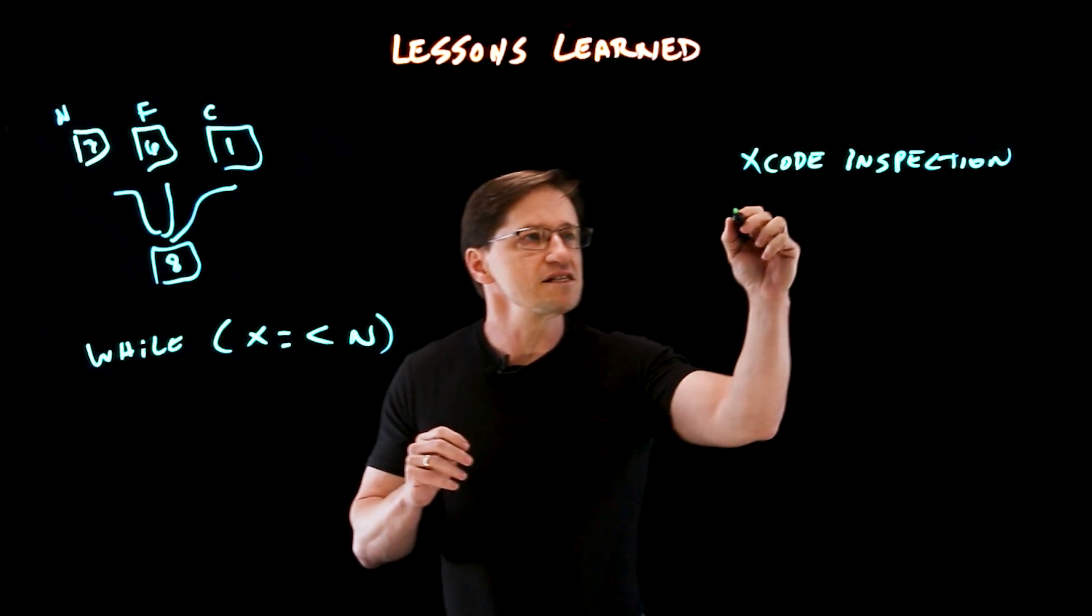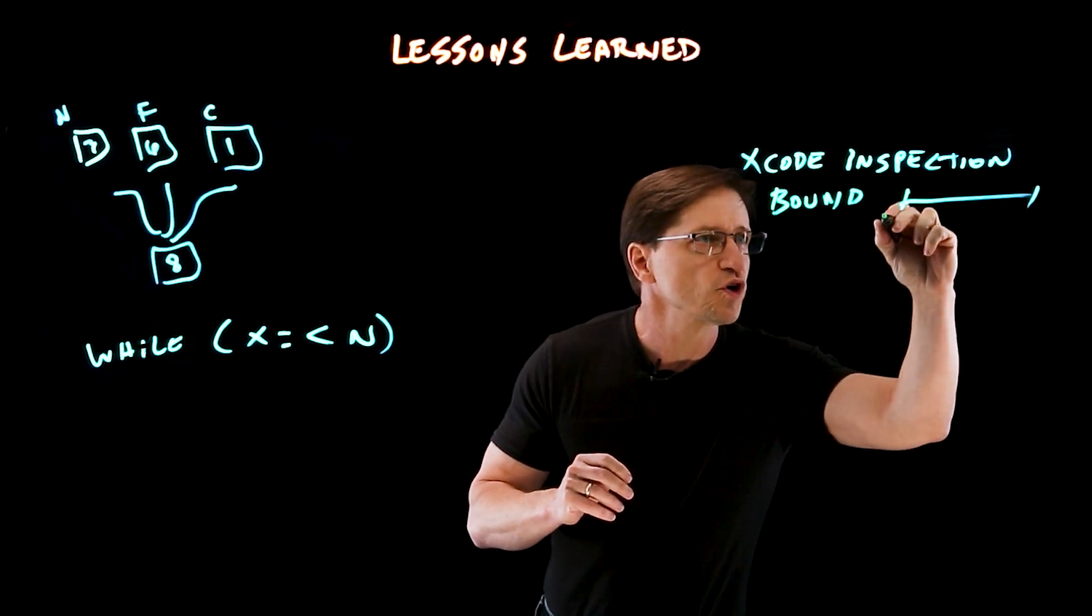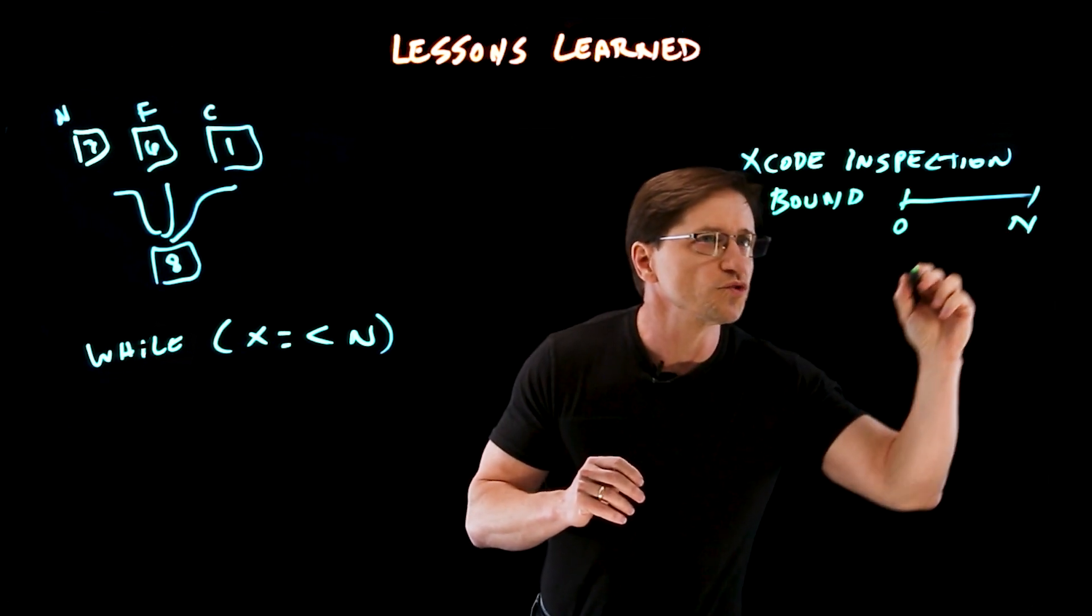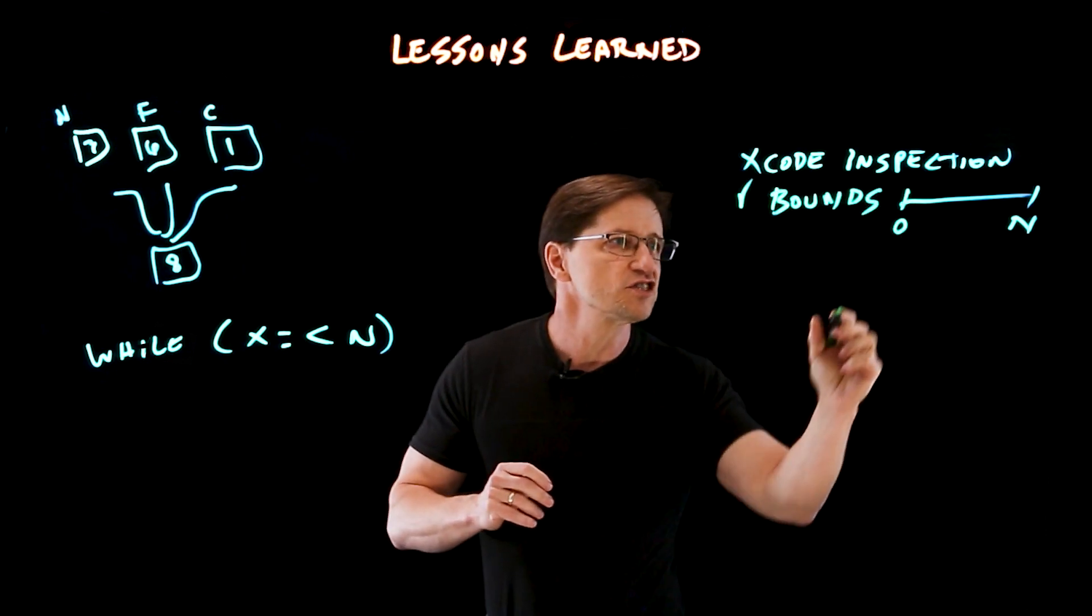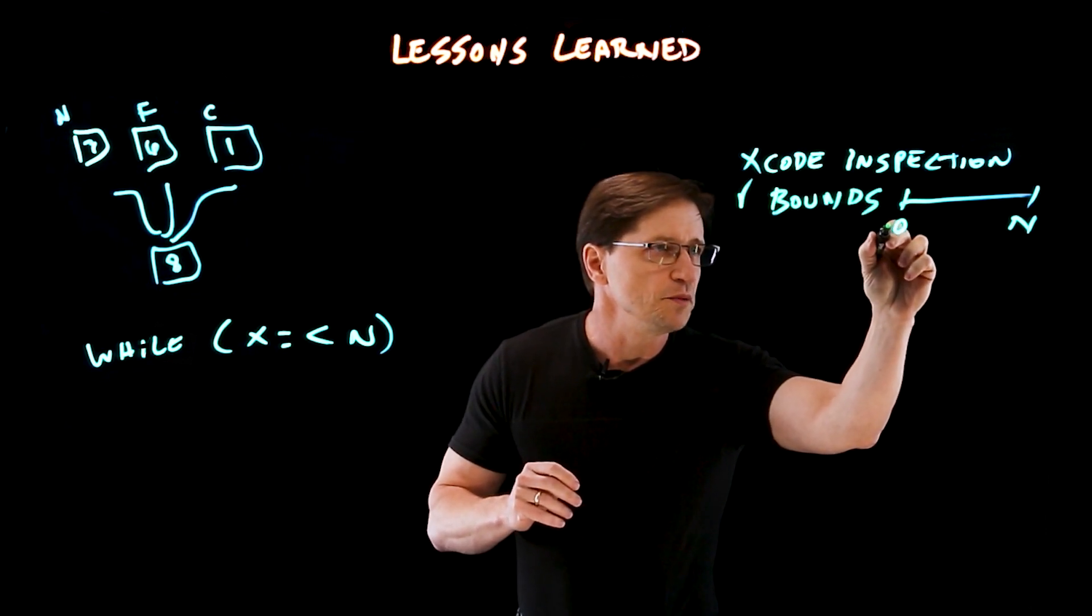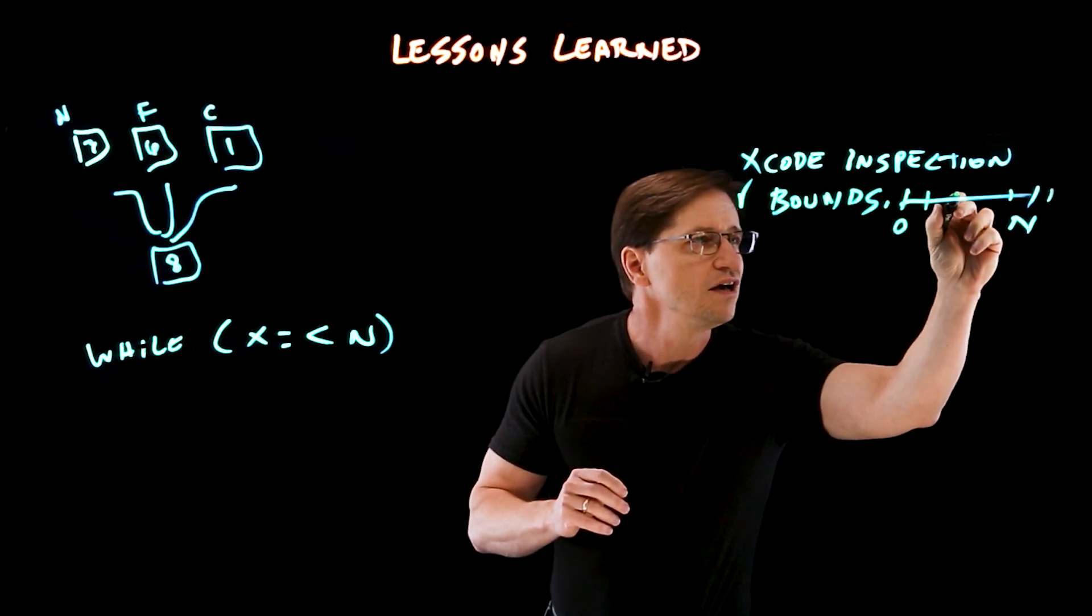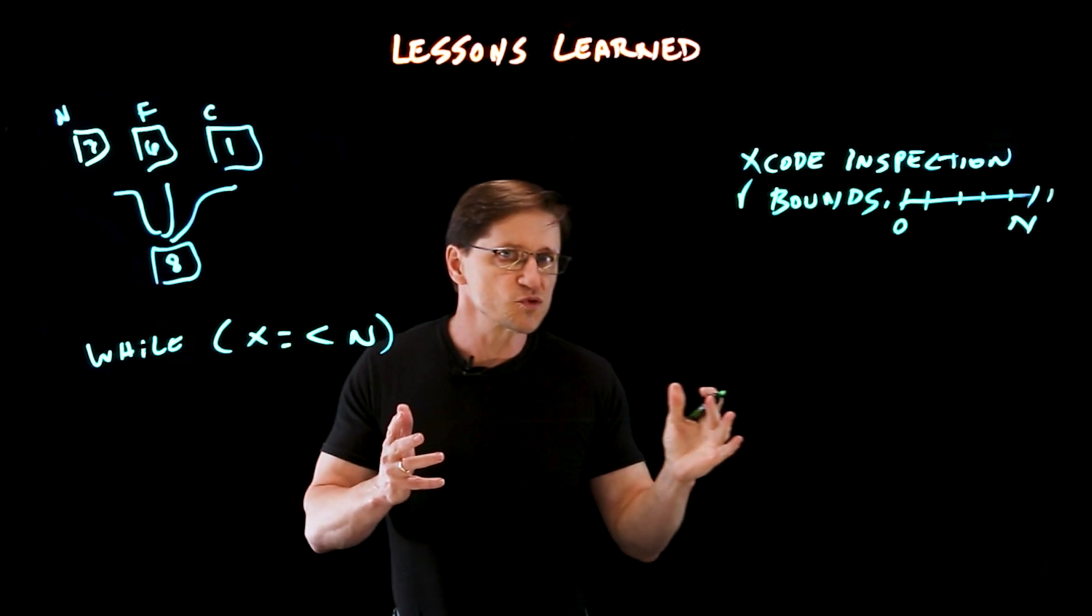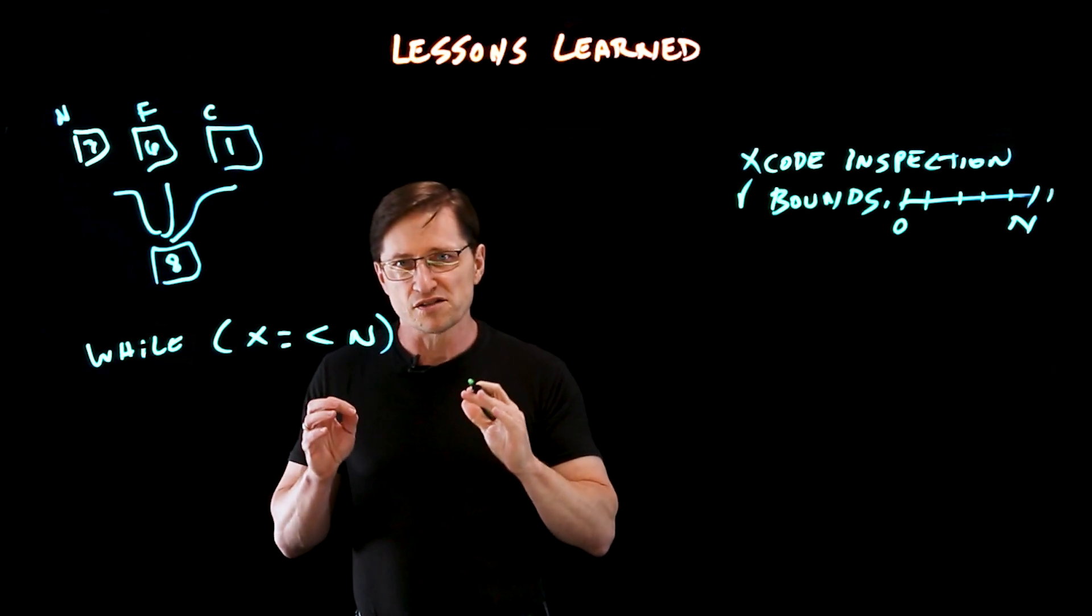The second is bounds. And this might seem like a programmer 101 sort of issue. But you should have better bounds testing, especially around the beginning and end of a limit. So test here, here, here, and here. Of course, you need to test elsewhere. But those boundary conditions are the ones that invariably cause problems.